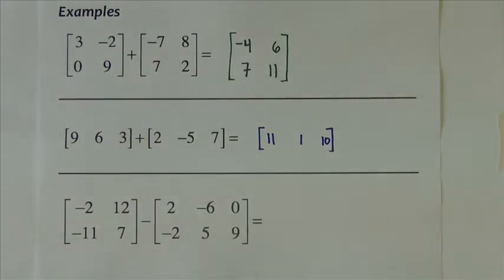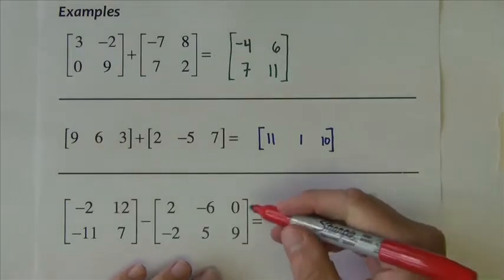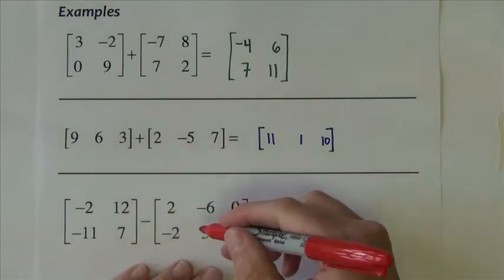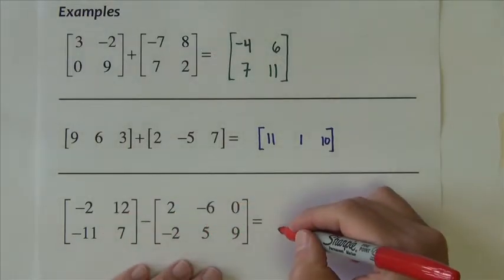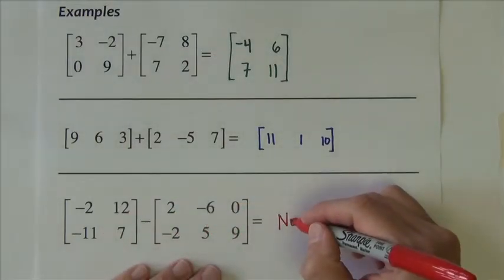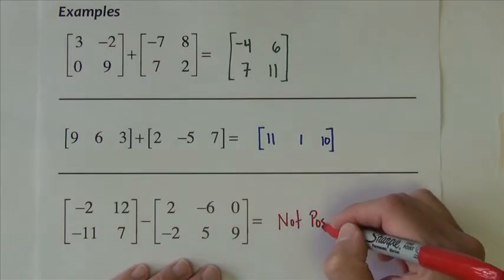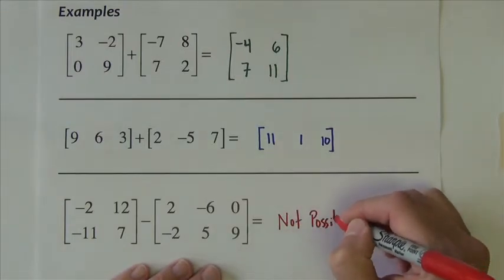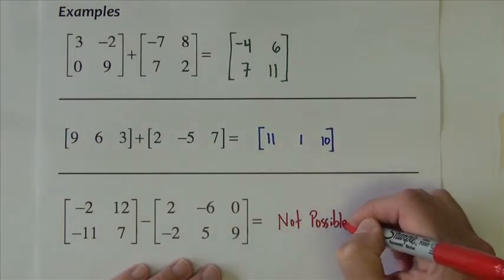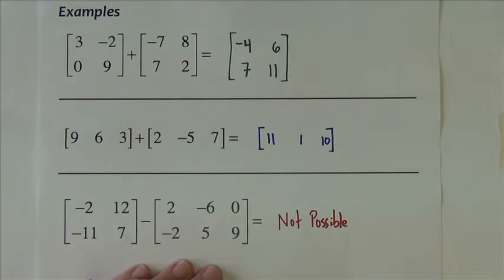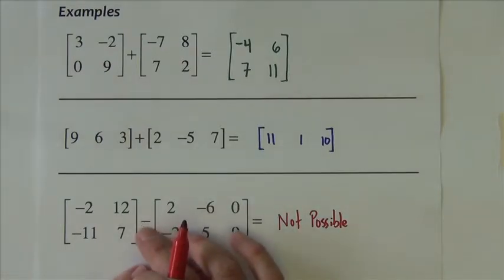The last problem on the bottom: visual inspection shows these are not the same size — I have a two by two and a two by three. This is not possible; I cannot subtract these as their sizes are different.